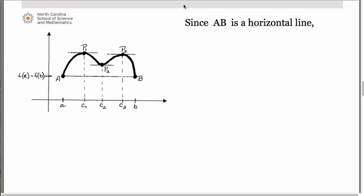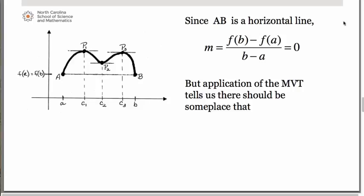Since the secant line that joins points A and B is a horizontal line, we know that the slope of that line, as given to us by [f(b) - f(a)] / (b - a), is going to be equal to 0. But application of the mean value theorem tells us that there should be some place at which f'(c), the slope of the tangent line at the point c, is equal to the slope of the secant line that joins the endpoints.